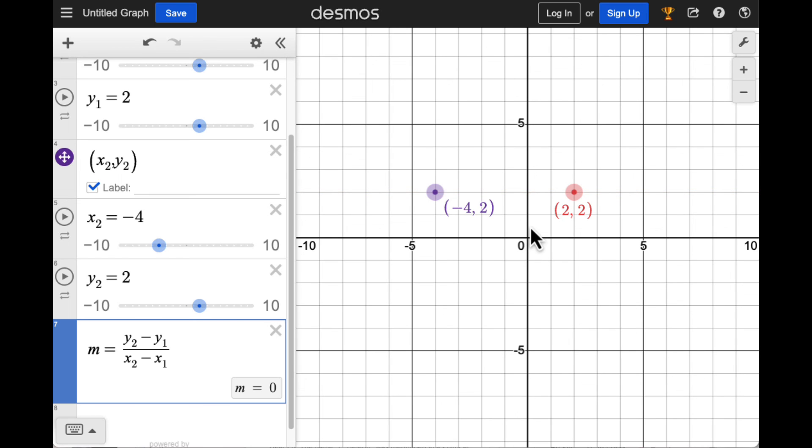Finally, move the points so that they have the same x coordinate. You'll see that this arrangement has an undefined slope. The reason for this is that the difference in x coordinates is zero, which means that the denominator is zero. Since division by zero is undefined, the slope is undefined.